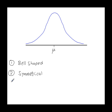Number three, the total area under the curve is equal to one. The area must be equal to one for the graph to represent probability.